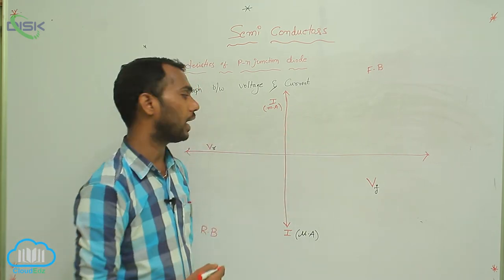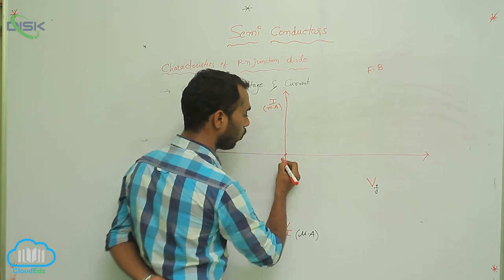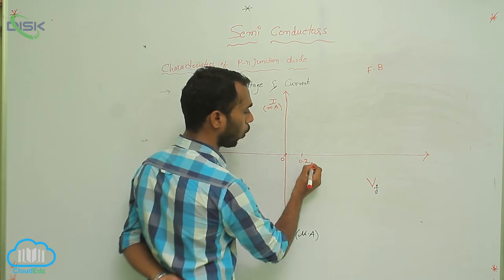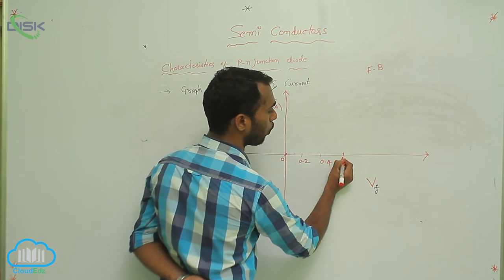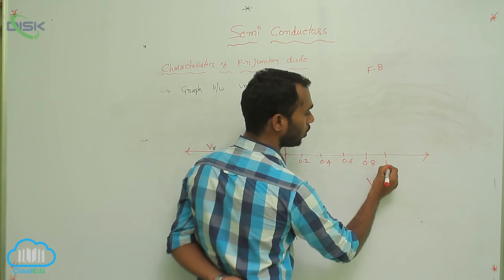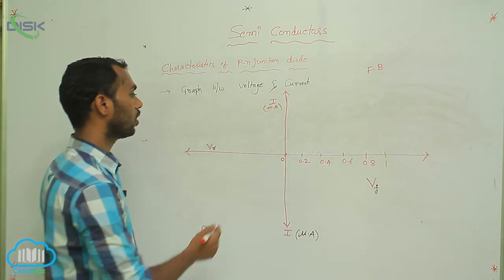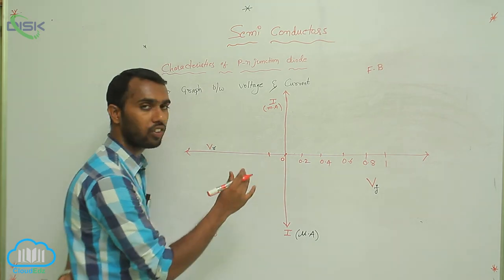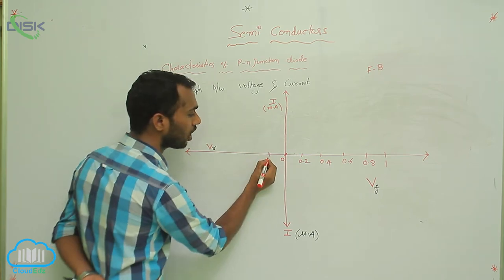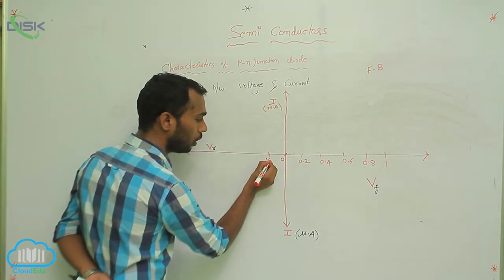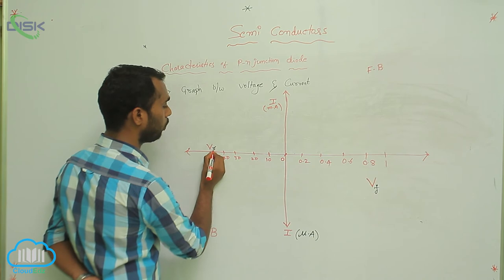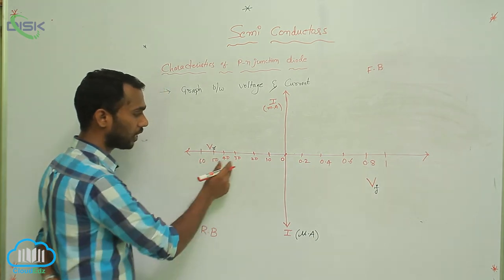Initially the voltage is 0. Then I am increasing: 0.2 volts, 0.4 volts, 0.6 volts, 0.8 volts, and 1 volt — like that I am increasing the voltage. In reverse bias, we have to apply more voltage, not 0.1 or 0.2. That is why here I am taking 10 volts, 20 volts, 30 volts, 40, 50, 60 — like that.